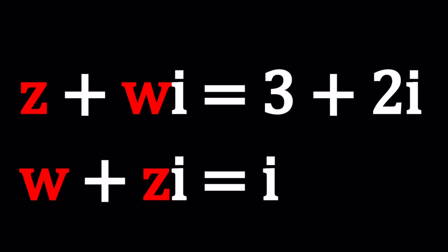You probably solve linear systems with real numbers and real variables. In this case, we're going to be looking at what happens if we have complex coefficients or variables.